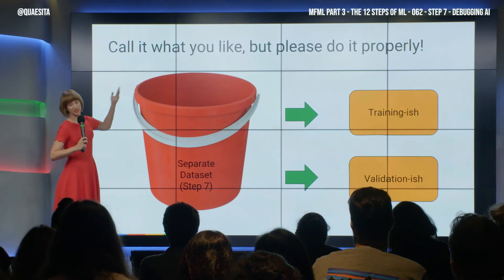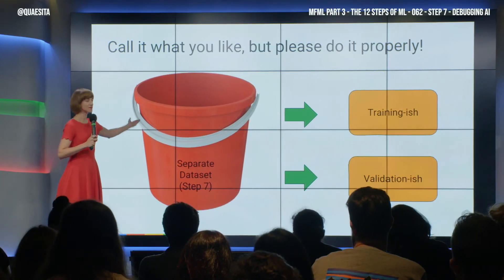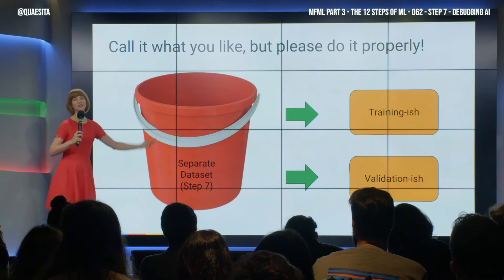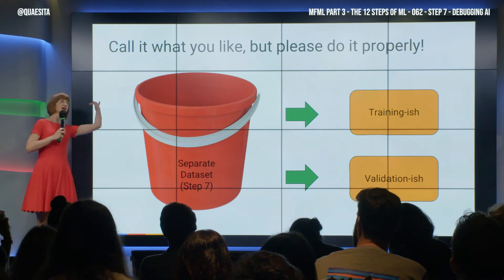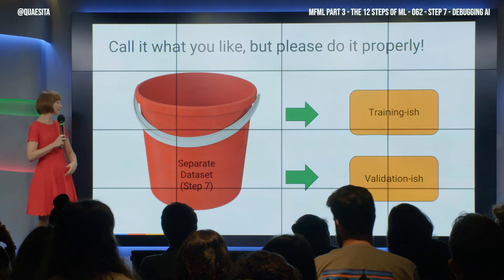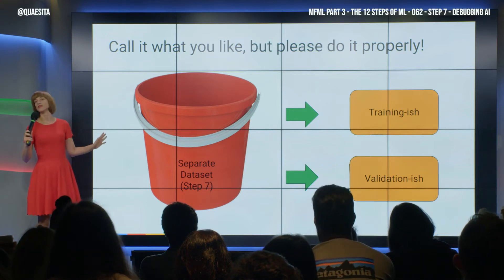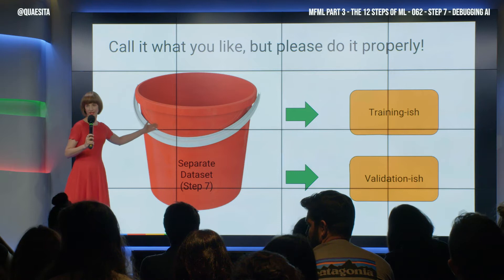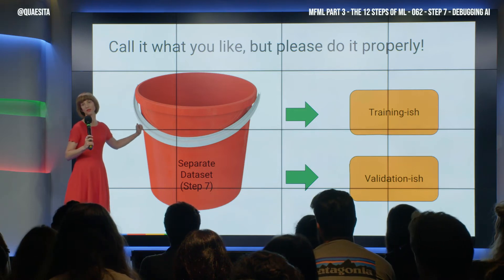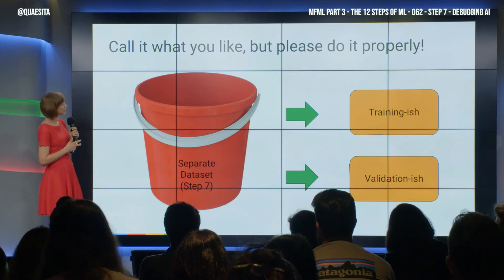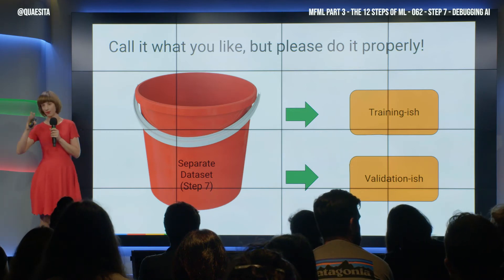Maybe you will say that what we're doing in this seventh step is training-ish. Maybe you'll say it's validation-ish. Maybe you'll ask me to put it back to step six or forward to step eight. I don't mind. The point is, it gets its own step because it gets its own data set. You need a separate data set to pull this one off. You can call it what you like, but please give it a fourth data set.